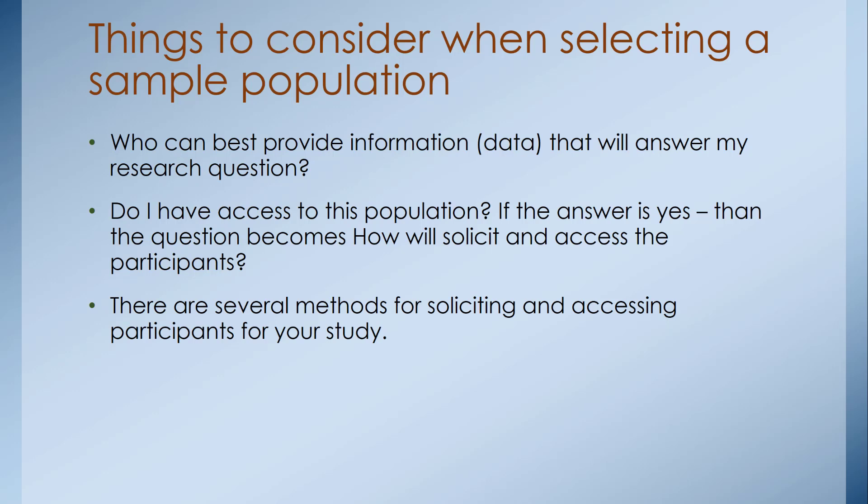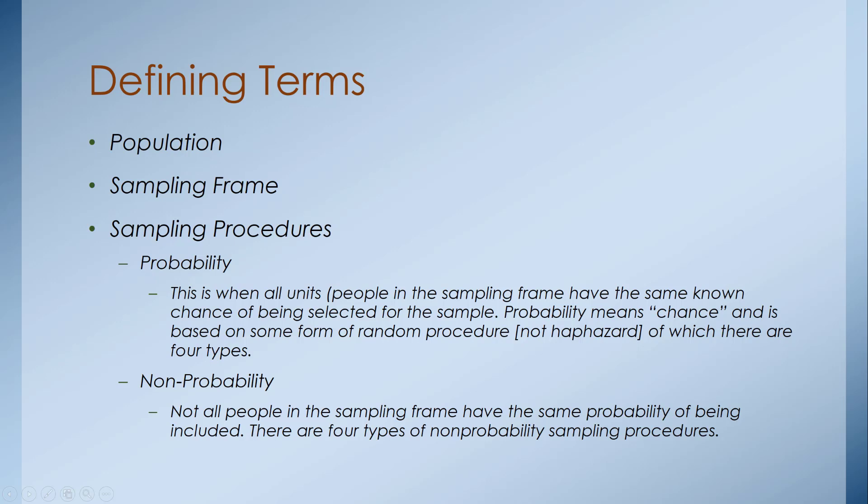There are several methods for soliciting and accessing participants of your study. Once you answer those first two questions, you have to decide which is the most logical or most feasible method for soliciting participants. Let's begin by looking at some key terms and defining them, which include population, sampling frame, and the different sampling procedures.